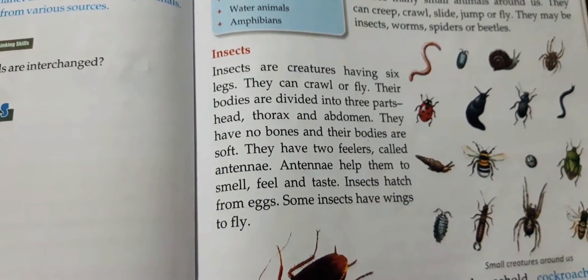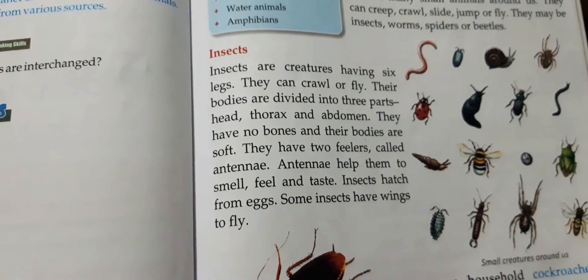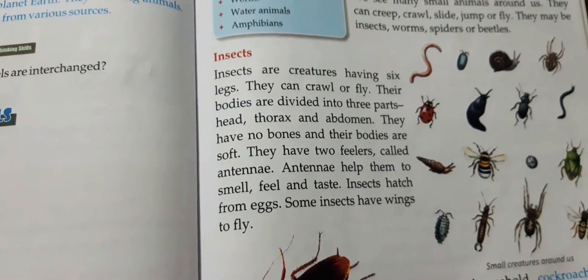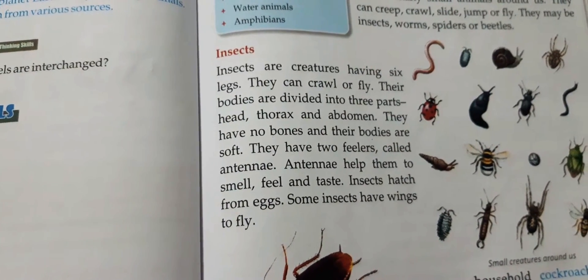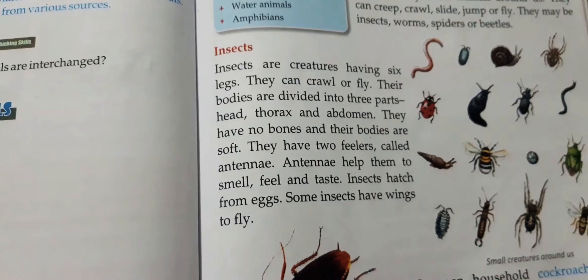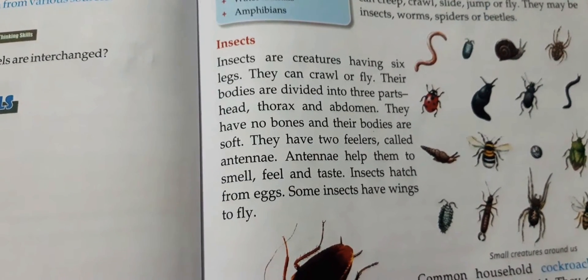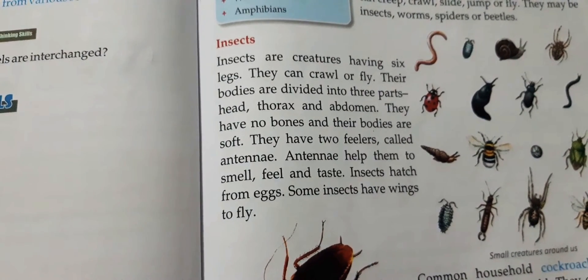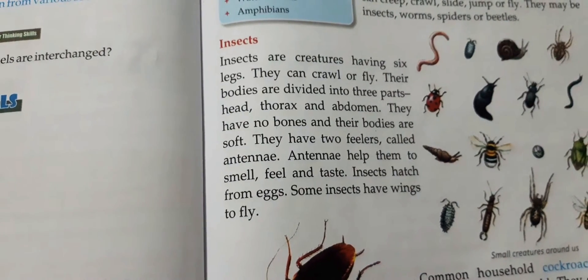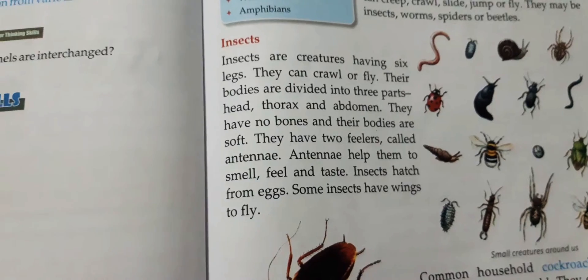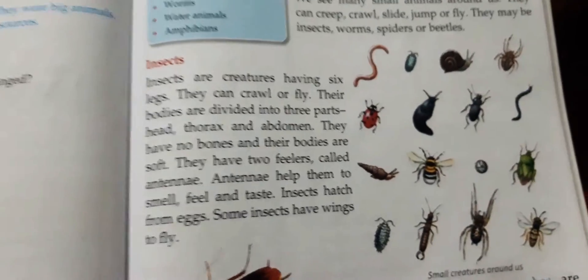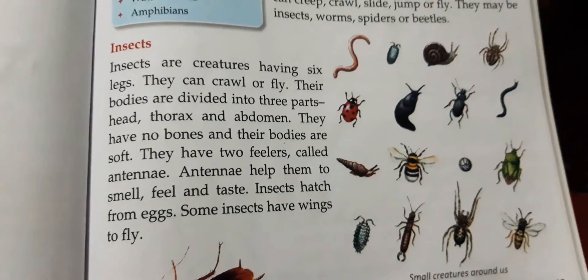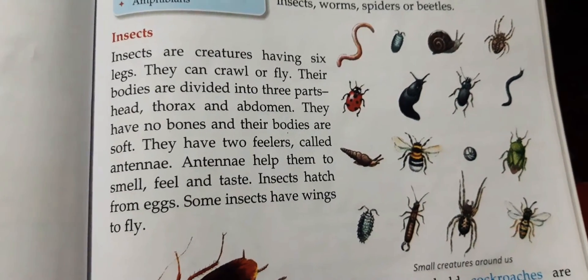Their bodies are divided into three parts — head, thorax and abdomen. They have no bones and their bodies are soft. They have two feelers called antennae. Antennae help them to smell, feel and taste. Insects hatch from eggs. Some insects have wings to fly. You can see pictures of different worms and insects in your book.